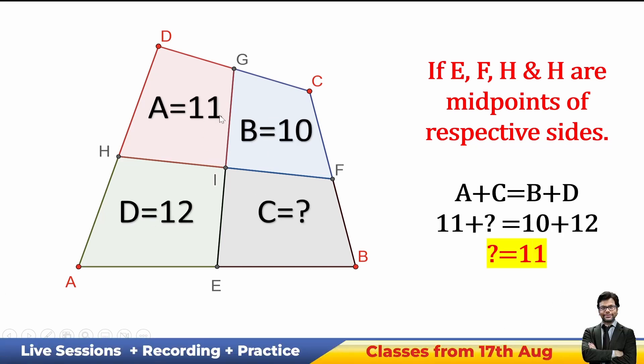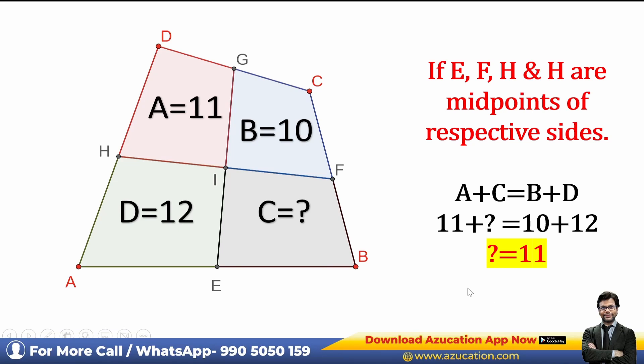Let's solve our question. We have 11, 10, 12, and C. So A plus C equals B plus D: 11 plus question mark equals 12 plus 10, which is 22. Then question mark is 11. I hope you remember.